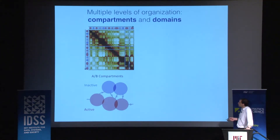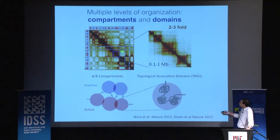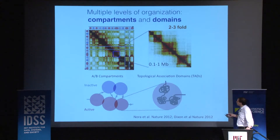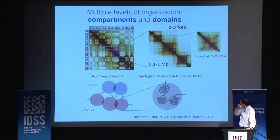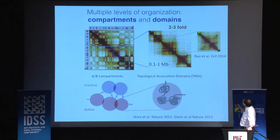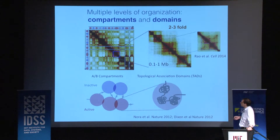What did we learn? The main features of the data: there is a checkerboard that reflects separation of active and inactive regions of the genome in space. If you zoom into these maps, you see a block diagonal structure — domains of the genome where there are more interactions within each domain and fewer interactions between domains. They're called topological association domains. If you zoom in further, you see corner peaks and finer structures inside domains. These are the main features of Hi-C maps seen in the human genome.